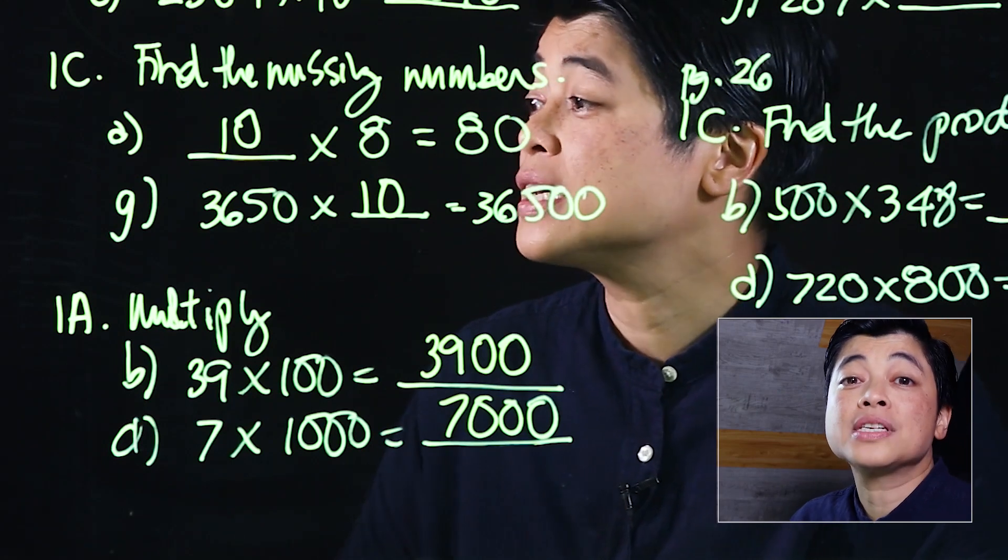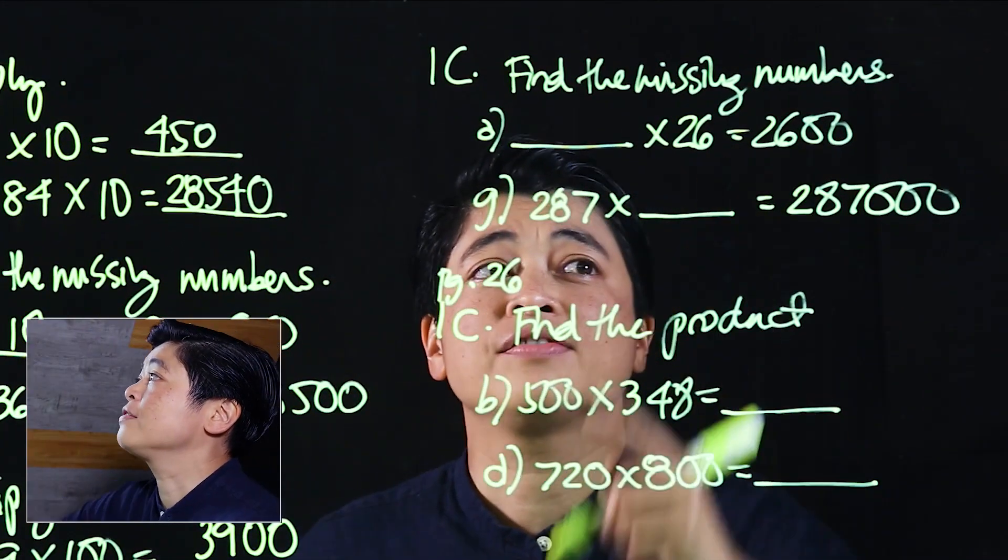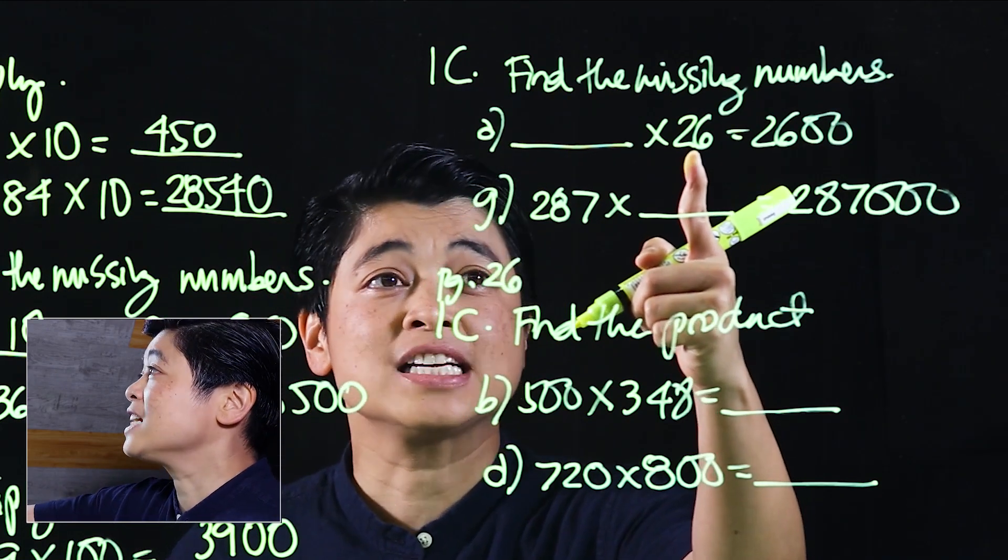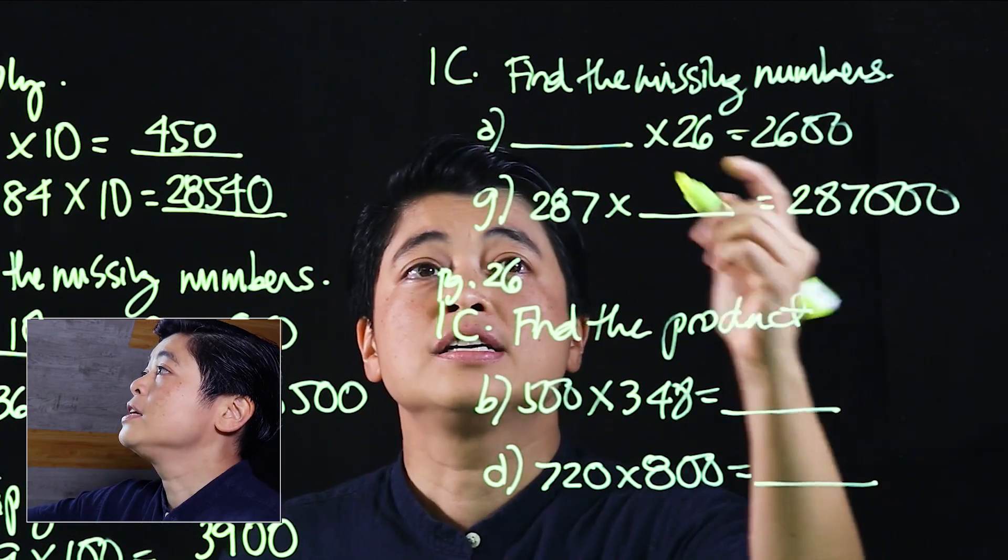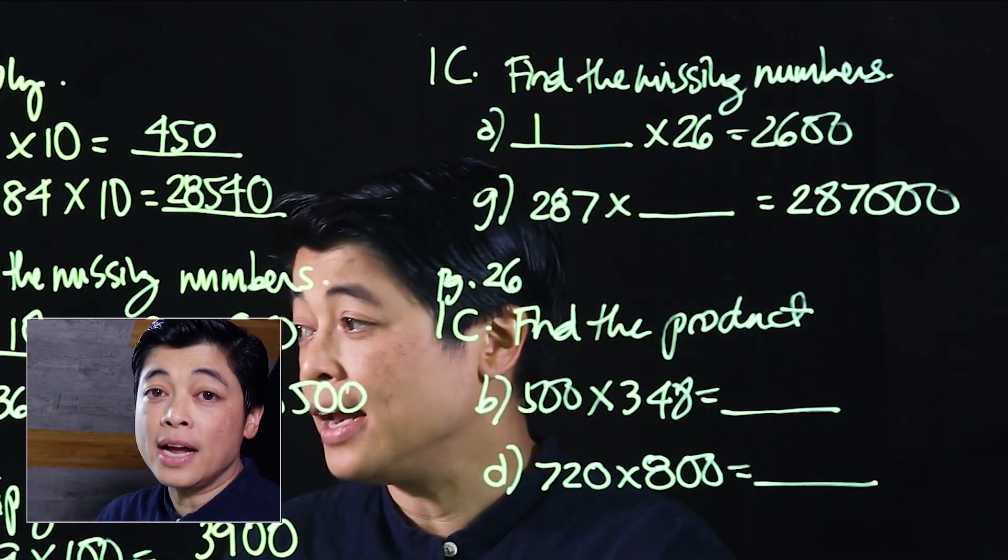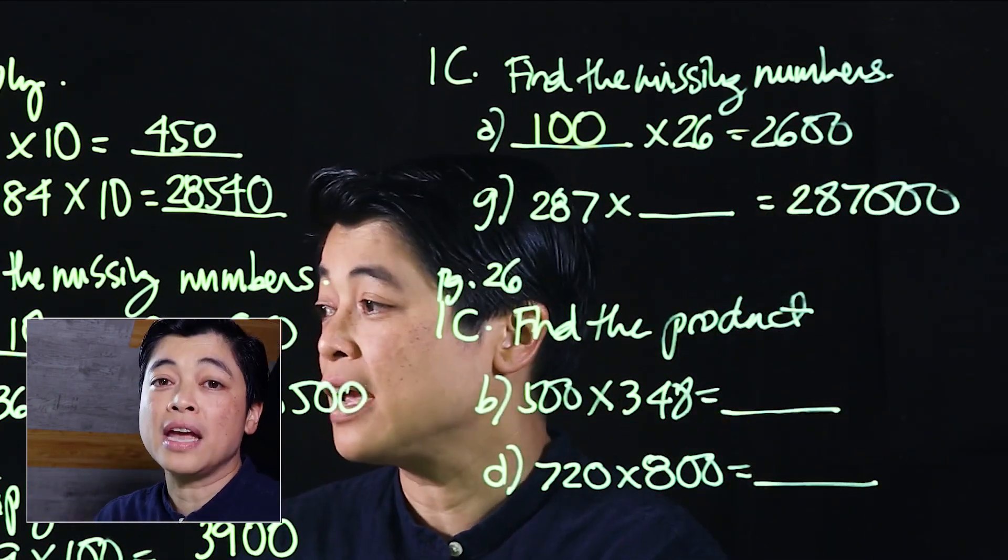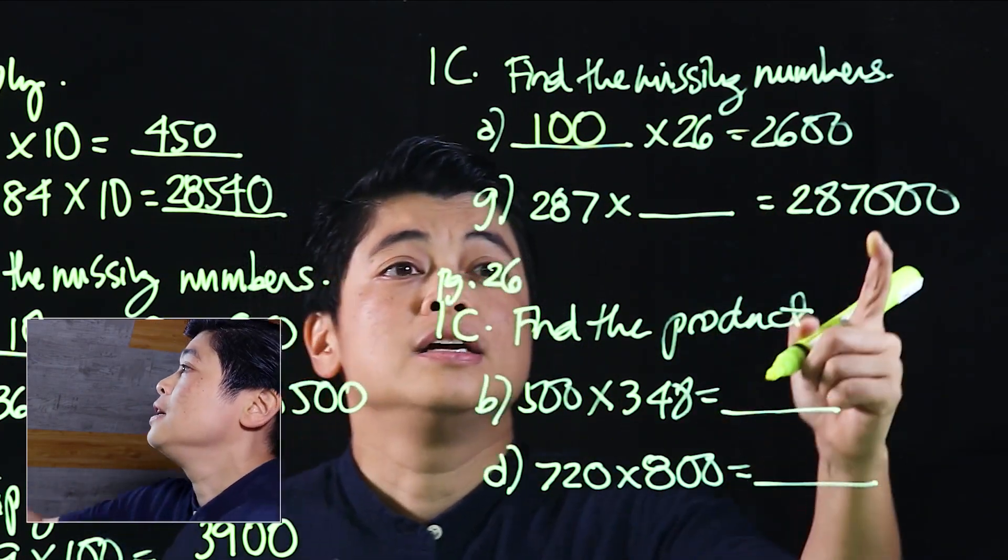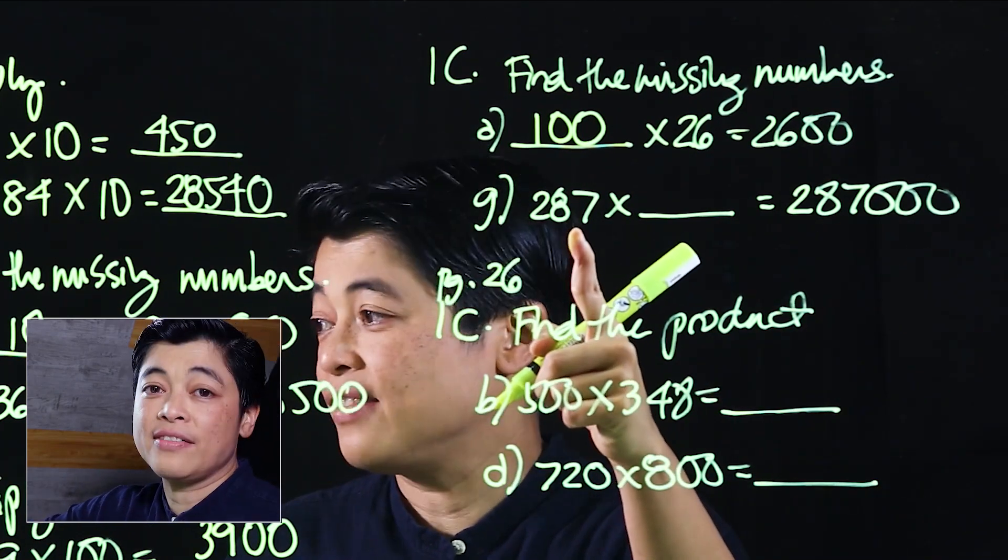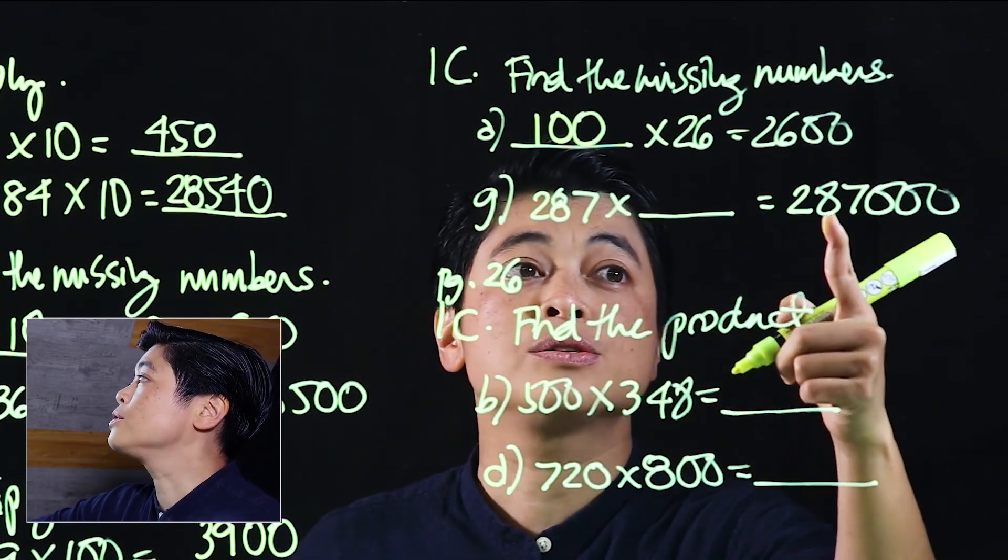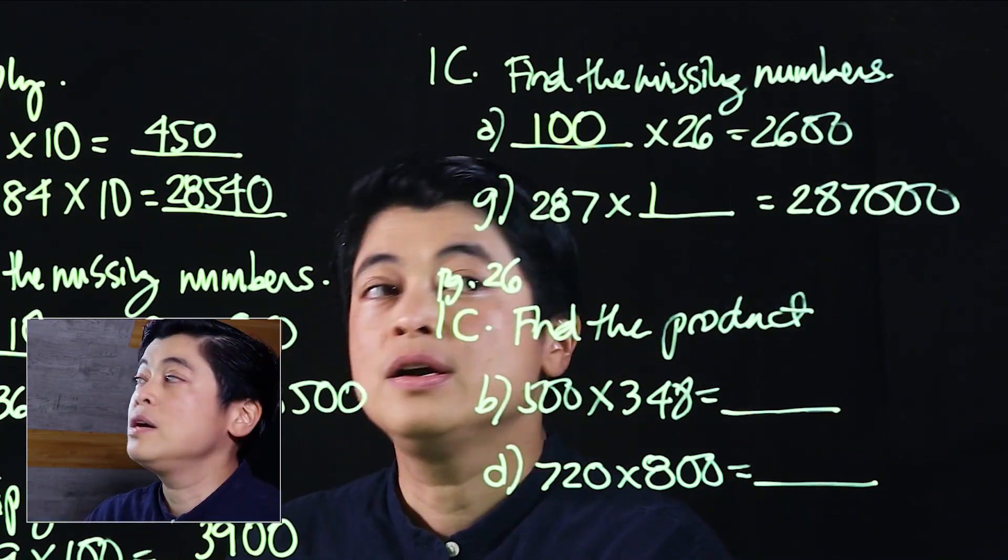When multiplying by tens, hundreds, or thousands, all you have to do is add the zeros at the end. Continuing, it says find the missing numbers. This is: something times 26 equals 2600. Clearly this has to be 100, because I have two zeros at the end of my product.